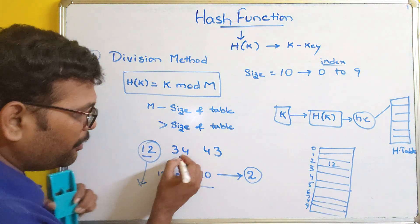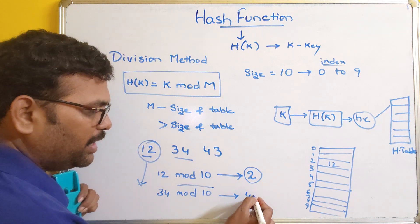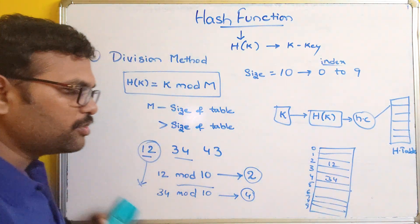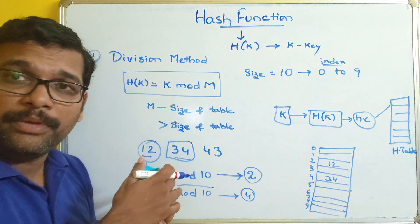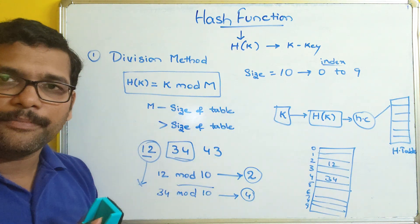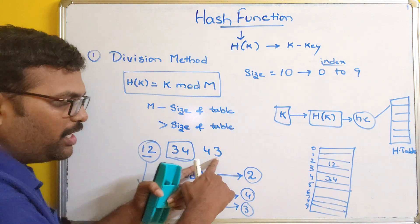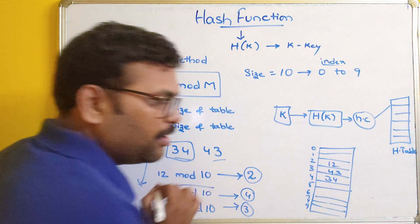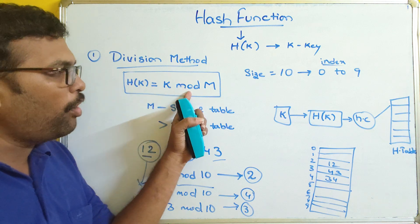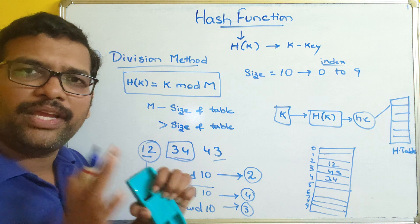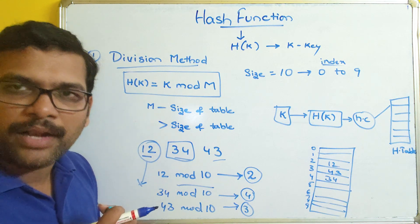For 43: 43 mod 10 = 3, so 43 will be stored at index 3. This is the division method where we use key mod M, and M is the size of the table. We can take M as the size of the table, or sometimes greater than the size — but not less. Hope you understood this method.